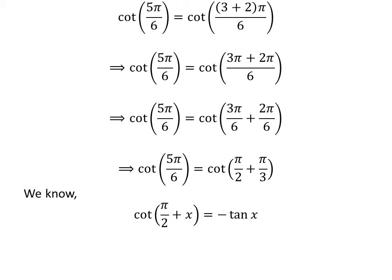We know the famous trigonometry identity: cotangent of half of pi plus x is equal to minus tangent of x. The proof of this identity has been explained in the video appearing in the upper right corner, and the link is also given in the description. Applying this identity gives us cotangent of 5 times pi upon 6 is equal to minus tangent of pi upon 3.